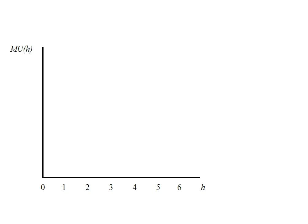We can go ahead and graph this. Now my vertical axis is the marginal utility of h, and my horizontal axis is the number of hamburgers.